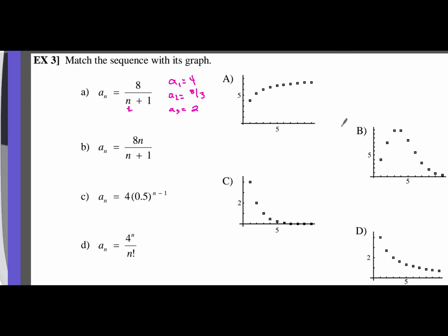We're going to use our graphing calculator. First, analyze the scale of each graph. The Y-axis goes up to about 8 and the X-axis goes to 10, so all graphs have 10 terms plotted. Our X-axis will go from our first to our tenth term. Looking at choice C, the graph is right near the X-axis, so we'll set our Y range from negative 1 to about 12 — going a little above and below — which is important when we set up our viewing window.